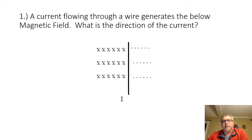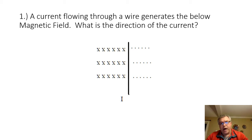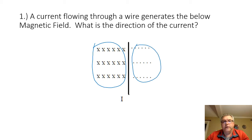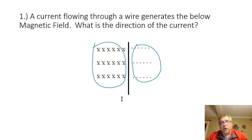Our first problem asks us to find the direction of the current traveling through a wire based on the orientation of the magnetic field generated by that current. We notice that on the left-hand side of the wire, we have X's, representing the magnetic field moving in the negative Z direction or into the page. On the right-hand side, we have dots, representing the magnetic field moving in the positive Z direction or coming out of the screen. To find the direction of the current, we use the first right-hand rule.